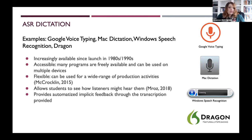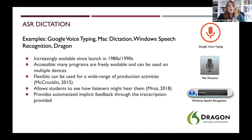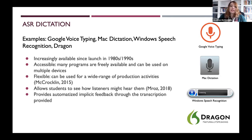The transcript can be used as automatized implicit feedback. It doesn't tell students exactly what they're doing right or wrong — that's not the goal of these programs. But by seeing what is written down, students can have an idea of what they might be doing wrong in their pronunciation that may be leading to a loss of intelligibility.